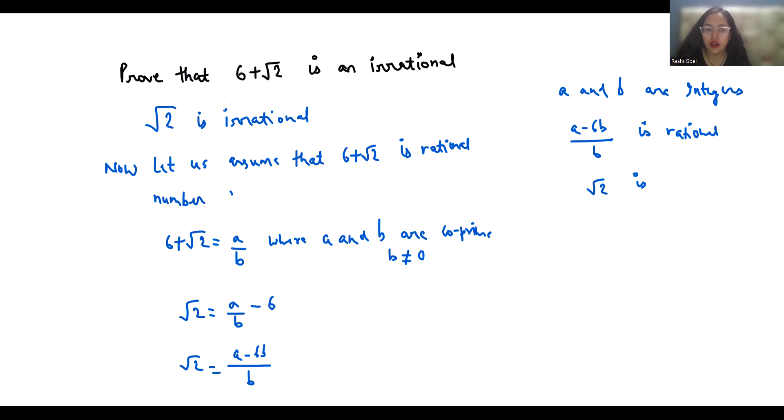But we already know that root 2 is irrational. So this contradicts the fact that root 2 is irrational.